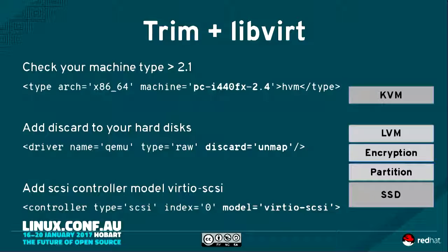Now we're going to throw KVM in the way. If you want to do a pass-through of those requests with KVM, you need to make sure your machine type is greater than 2.1 for discard to work. You need to add 'discard=unmap' to your hard disk definition, and you need to use the VirtIO SCSI driver. I recommend that you don't use the traditional VirtIO driver for any LibVirt/KVM-based storage — move over to VirtIO SCSI as your default. It allows for a much larger number of disks and discard works correctly. That's the area the community is investing in from a performance and bug fix perspective.